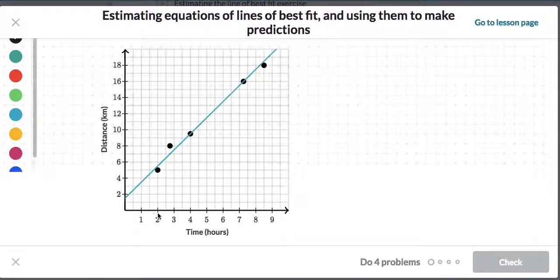This is the amount of time he spent on the hike, and this is the amount of distance that he covered. So each one of these data points is a hike that he had. So you've got a two-hour hike and he covered five miles. You've got an almost three-hour hike, he covered eight miles. You've got a four-hour hike and he covered nine and a half miles and so on.